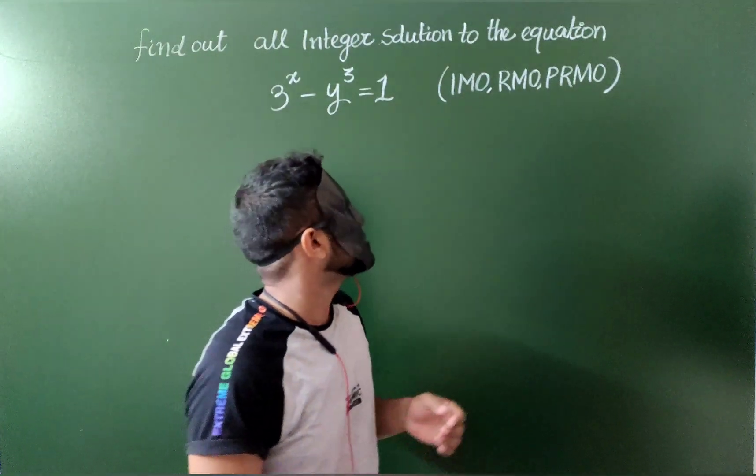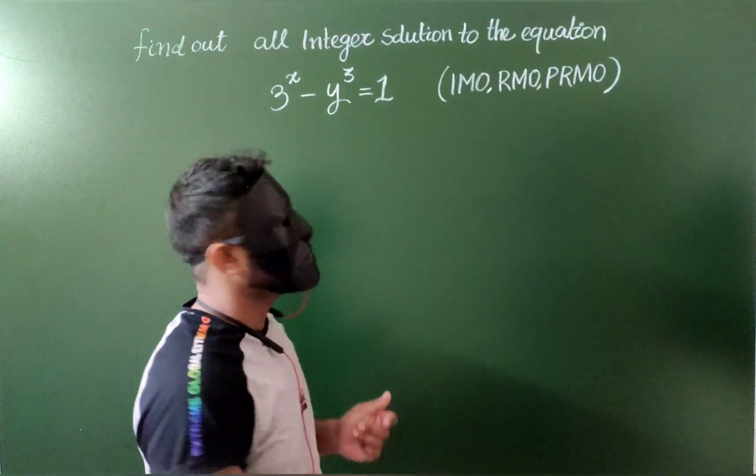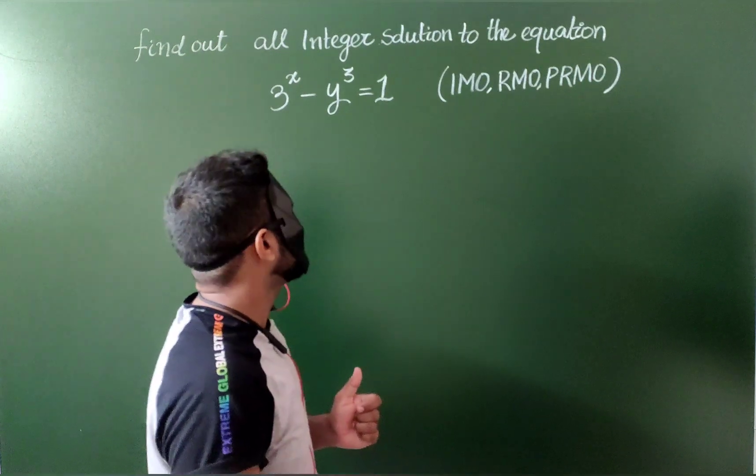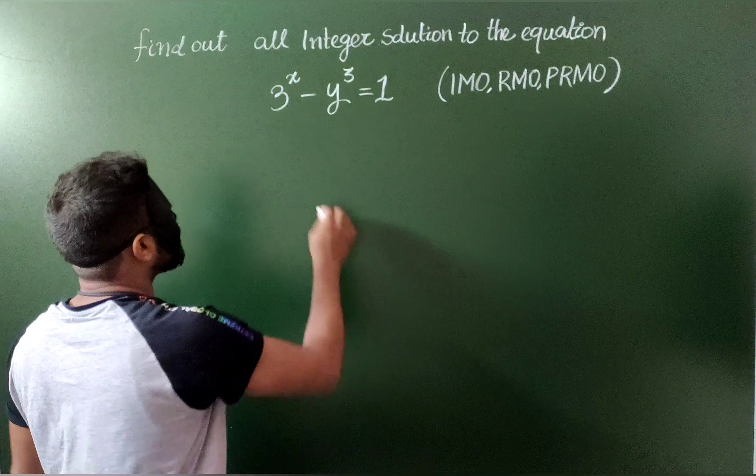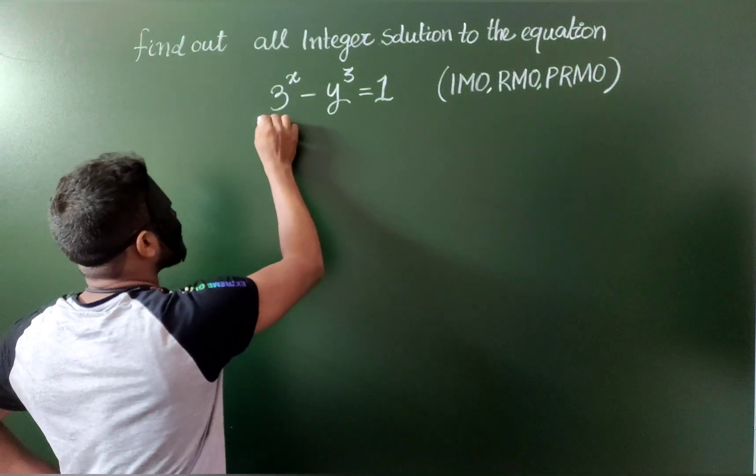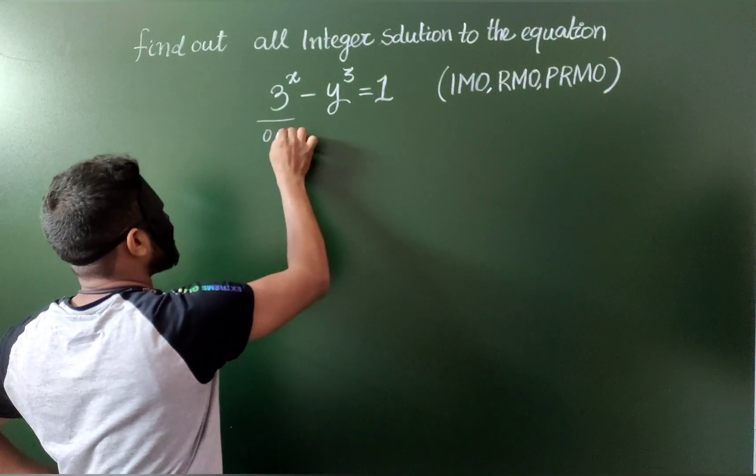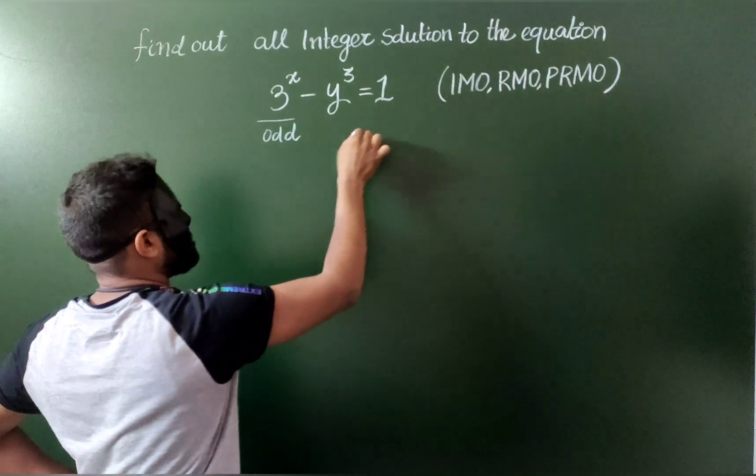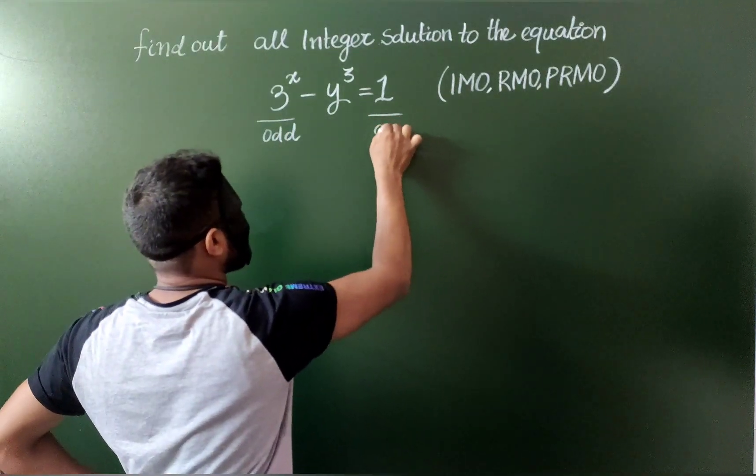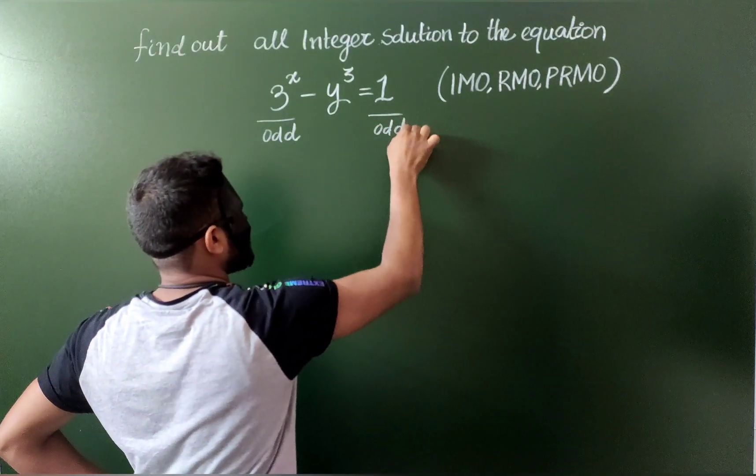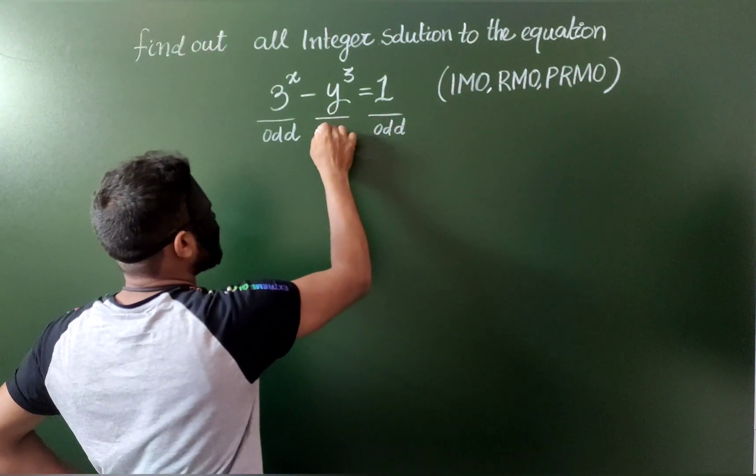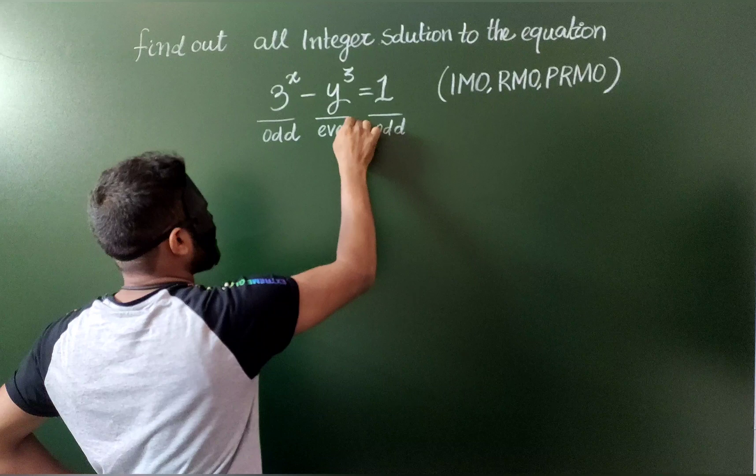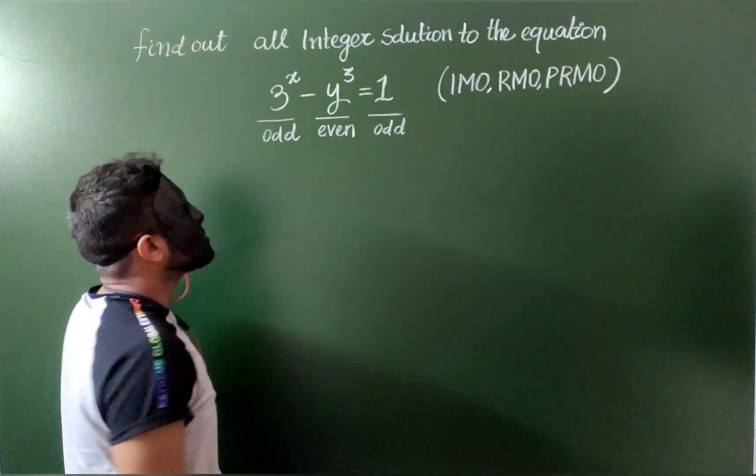How to start this question? First let's analyze the parity and see what happens. So if I see here, 3 to the power x is always odd and it gives us odd result. It means clearly y must be even.